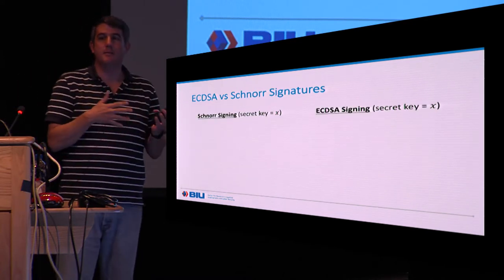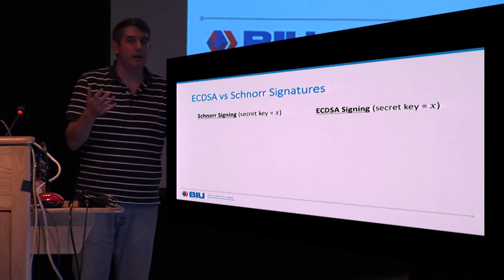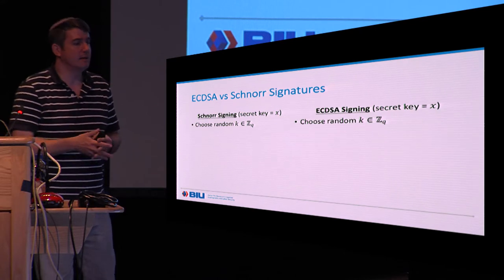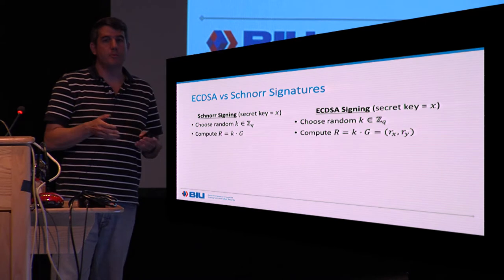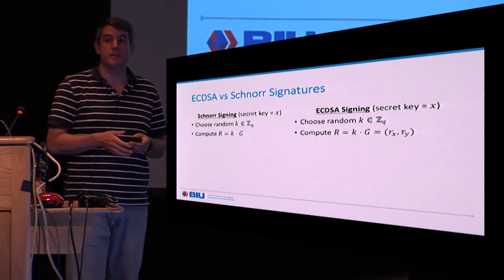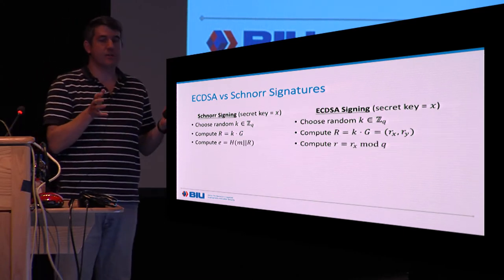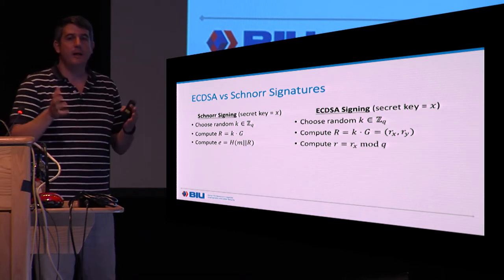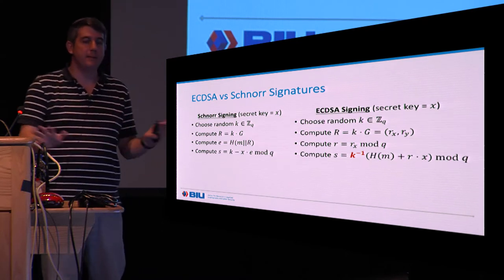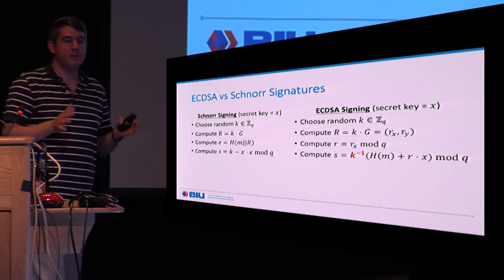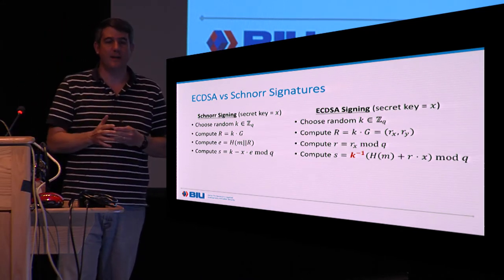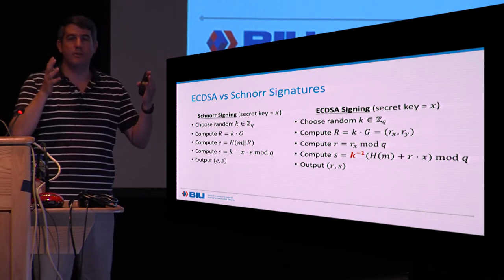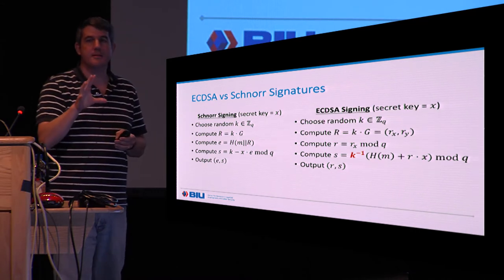To elaborate, let's compare Schnorr signing to ECDSA signing when we try to naturally make a two-party protocol. In both schemes, you choose a random K from Z_Q, where Q is the order of the group, and compute an elliptic curve point R = K·G where G is the generator. In Schnorr, you hash the message together with that point. In ECDSA, you take the x-coordinate of the point, reduce it mod Q to get a small r. Then Schnorr has a linear equation: s = K − x·e, whereas ECDSA takes K inverse and multiplies by (hash of message + R·x) all mod Q. Schnorr is entirely linear except for the hash function, whereas ECDSA has this K inverse which makes things problematic.